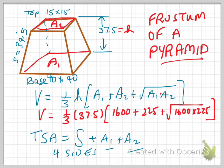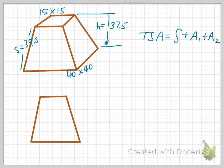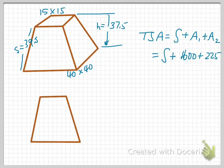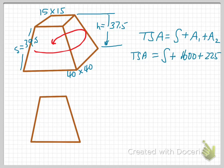Now let's discuss the total surface area. The total surface area is given as the lateral surface area plus the area of the top and the area of the bottom. In this case, we're going to have the lateral surface area plus the 1,600 square unit base — that is 40 by 40 — plus the 225 square units from the top. What we need to do now is to step aside and determine the lateral surface area, that is, the surface area around the four sides of this frustum of the pyramid.